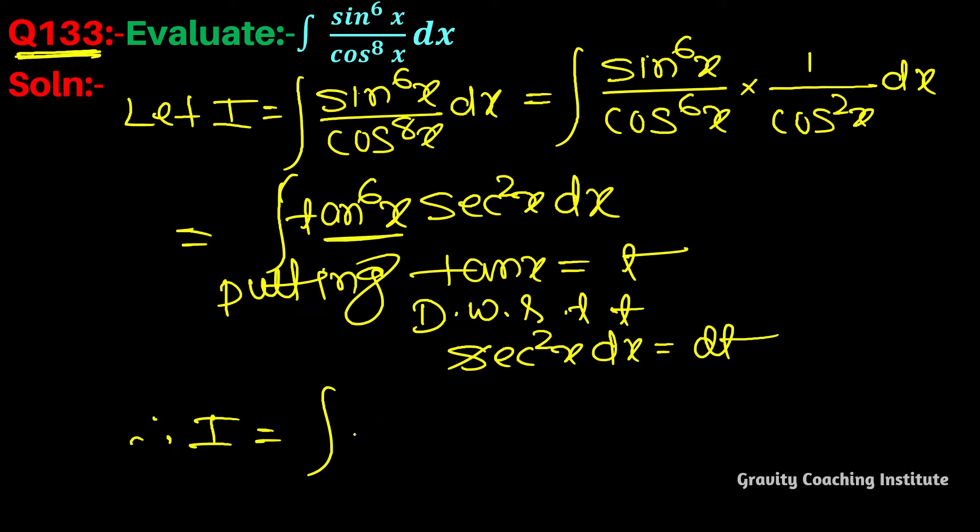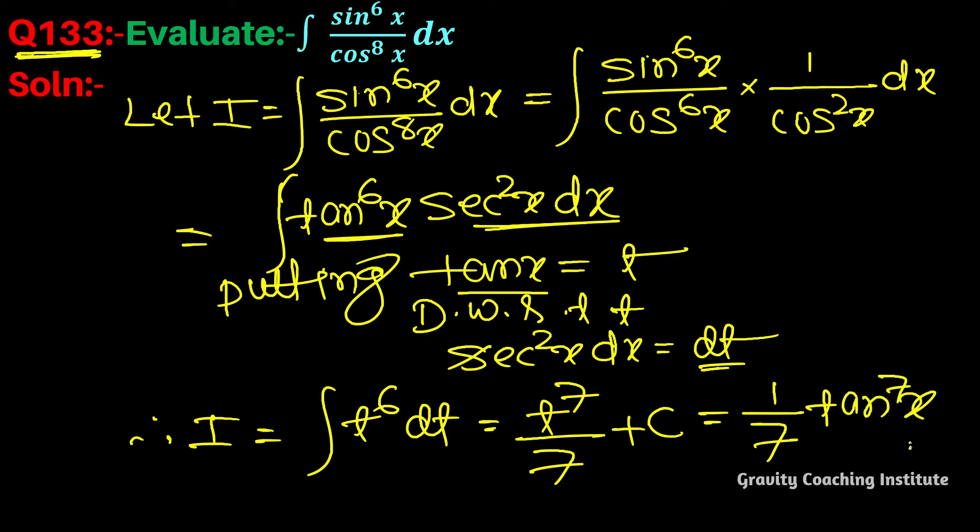Here we put t to the power 6 and sec square x dx becomes dt, equal to t to the power 7 by 7 plus C, equal to 1 by 7 tan power 7 x plus C. Answer.